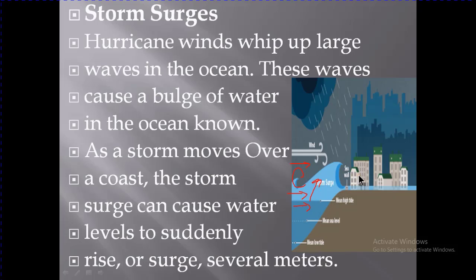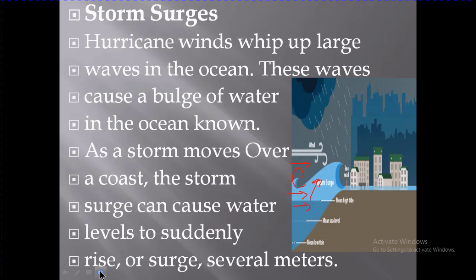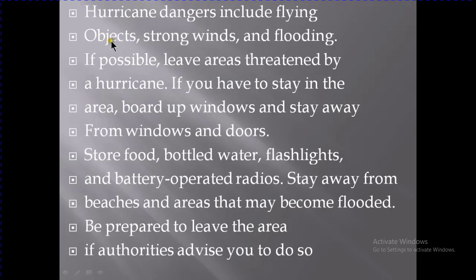This bulge is known as a storm surge. You can see the water coming out from the ocean onto the surface near nearby places. The storm surge can cause the water level to suddenly rise several meters — you can see here the mean low, mean sea level, and high tide levels. The water can cross the sea wall and enter populated areas, potentially destroying buildings.